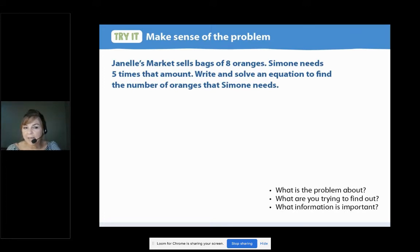Maybe you said something about oranges. Great. I'm going to read it again, and then you're going to pause to write what we're trying to find out. Here we go. Janelle's Market sells bags of eight oranges. Simone needs five times that amount. Write and solve an equation to find the number of oranges that Simone needs. So let's pause it, and you write down what we're trying to find out.